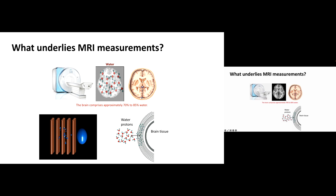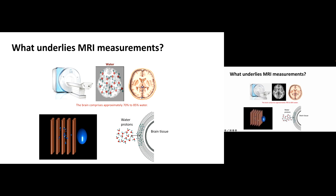In MRI we measure how this water interacts with the environment, the amount of water molecules, their interaction with the environment, and how they move. So we can also measure how water diffuses in the tissue, which is important when looking at white matter, because the diffusion along a pipe is different than the diffusion perpendicular to the pipe. MRI measures the water in the brain and its interaction with the environment.